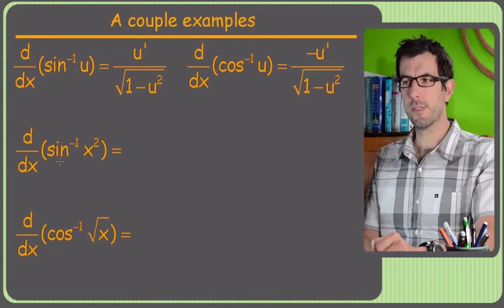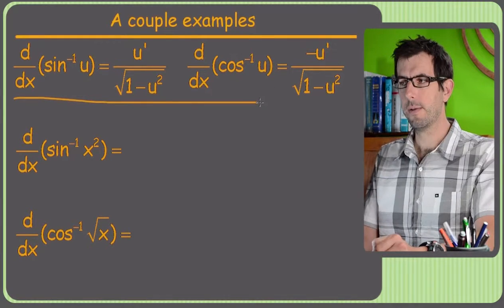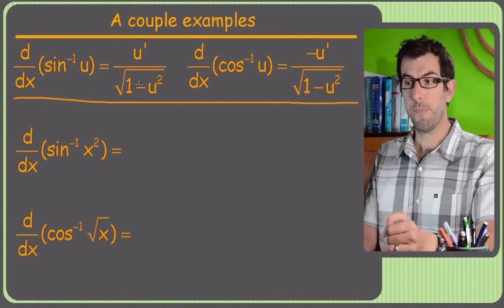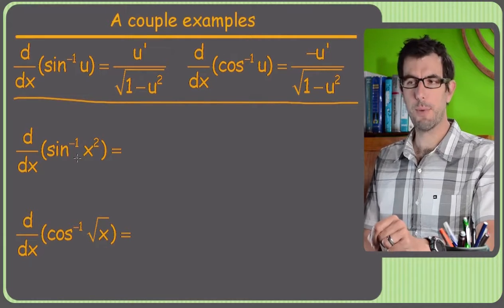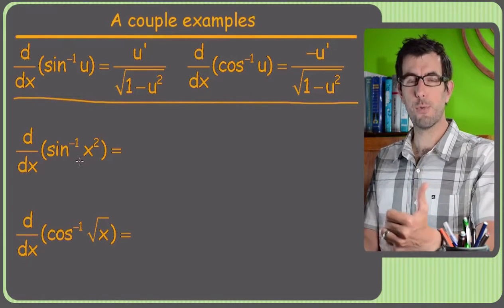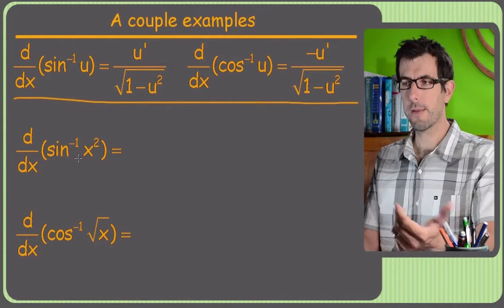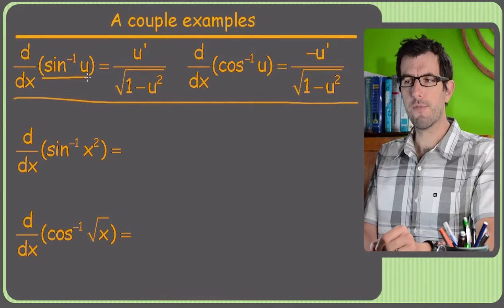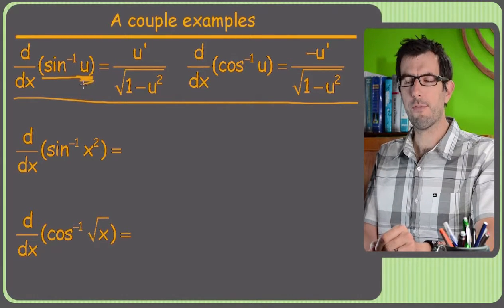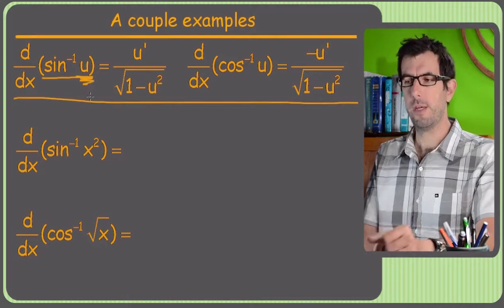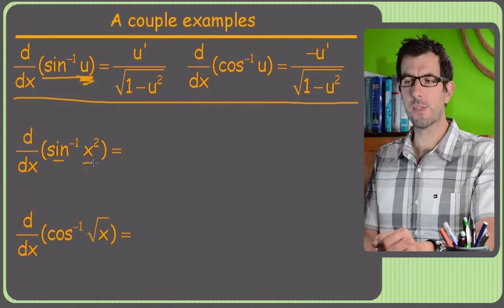Alright, so inverse. I just rewrote the formulas up here from the prior page. So let's just try doing a problem. The key thing with the chain rule always is to identify your U, right? But of course since we're looking at a trig function, U is just always whatever it's the inverse sine of. So in this case, it's the inverse sine of x squared, which means that must be my U.